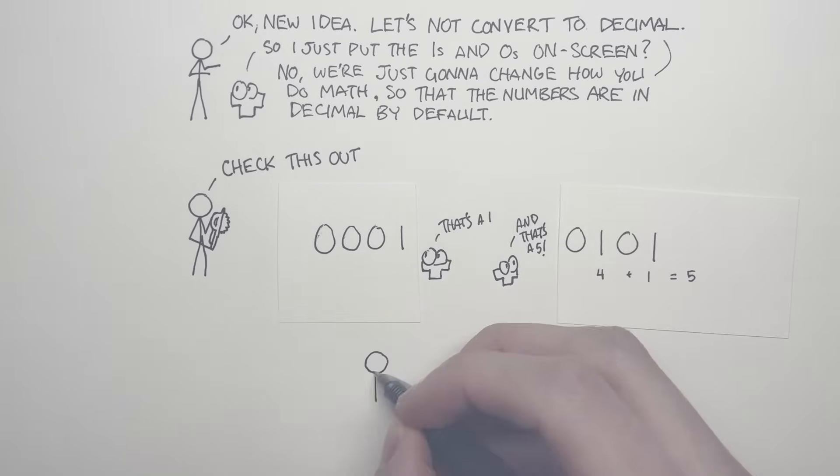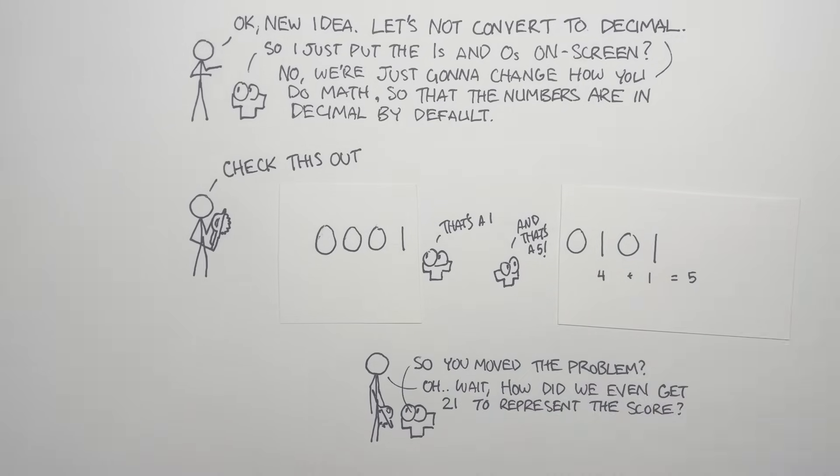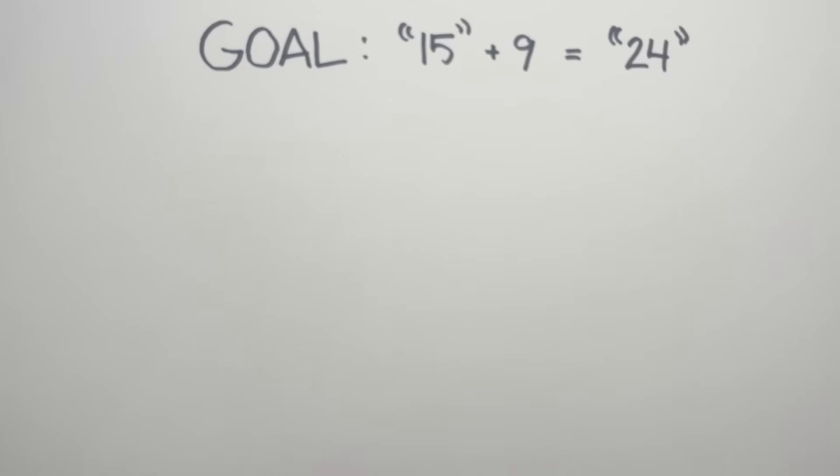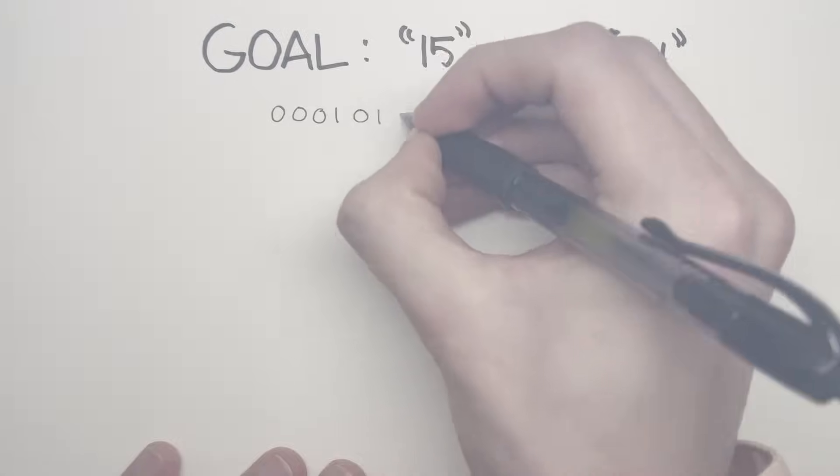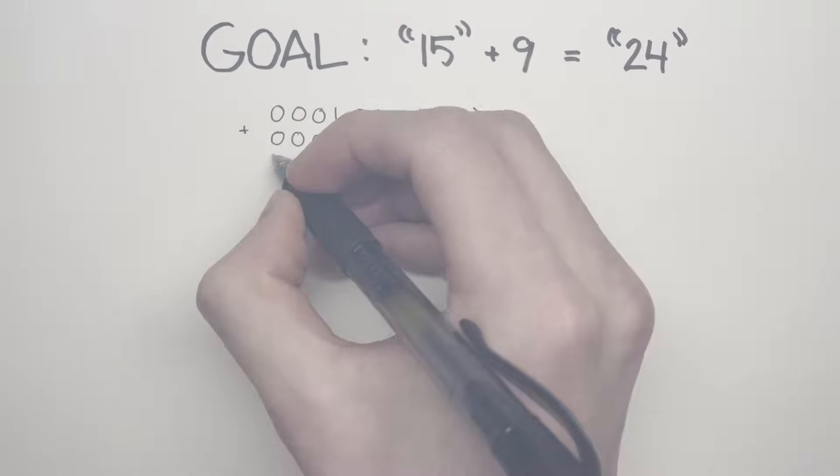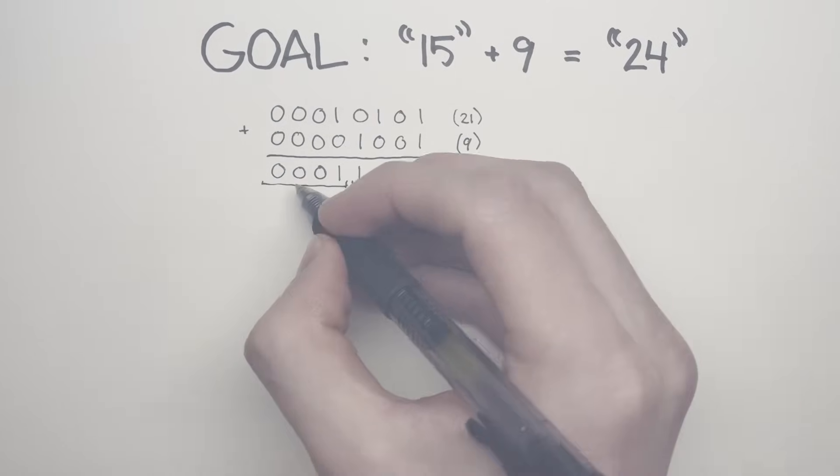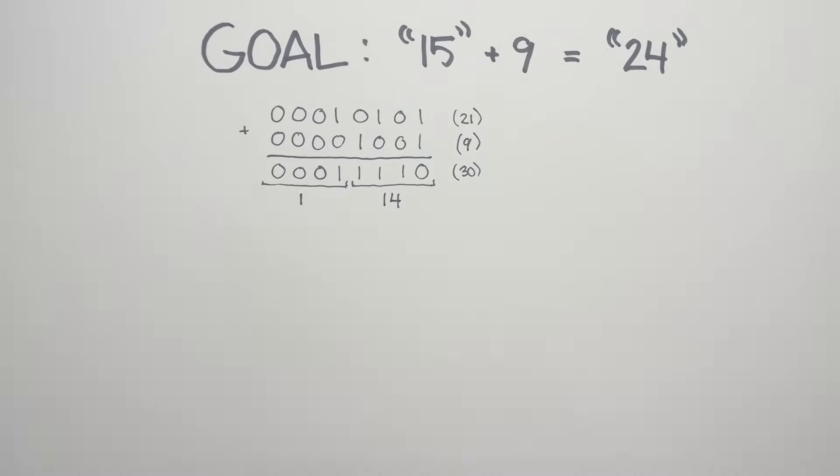But now we have a problem. How do you get the numbers to be in this format? Let's say I scored 9 points here. What we want to see on screen is 24. And if we took our previous binary number, 00010101, and added 9 to it, the result is 0001110. That is 30 in binary. And if we apply our splitting operation to it to get our digits, then our result is 1 and 14 as the two digits.